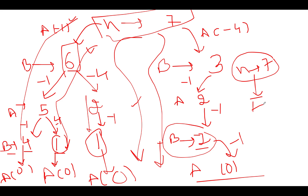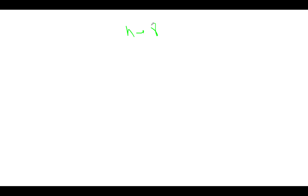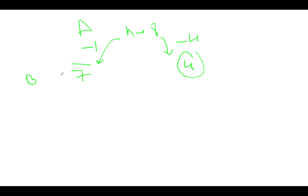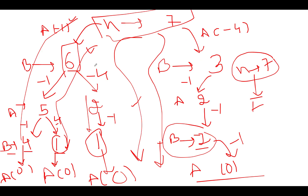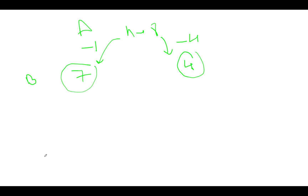Now let's take n equals eight. There are two possibilities: Alice removes one stone, leaving seven for Bob, or Alice removes four stones, leaving four for Bob. From our previous example, we know that for n equals seven, whoever starts the game can never win. So if Bob is left with seven stones, Bob will never win — giving Alice an advantage on that path.